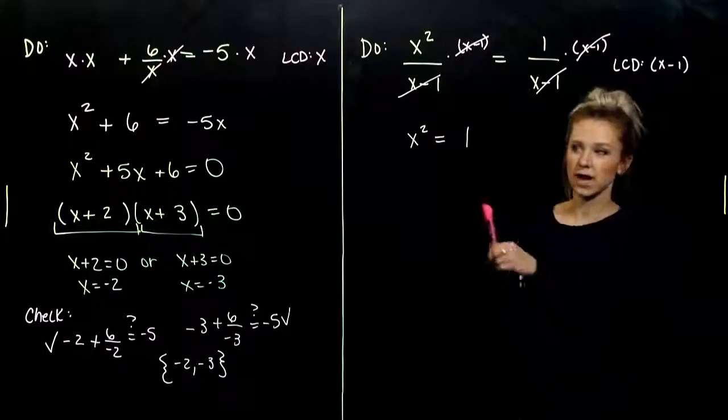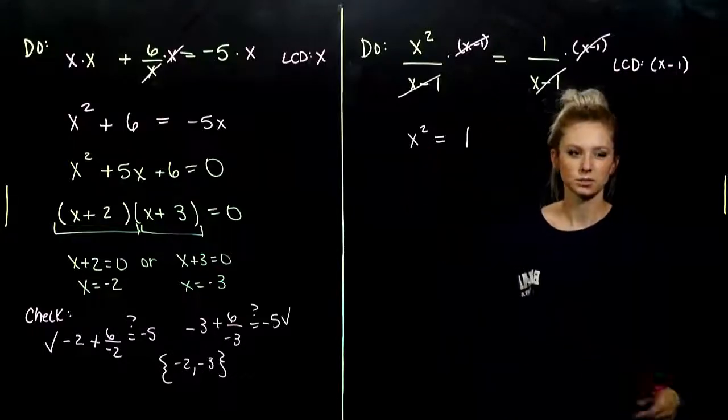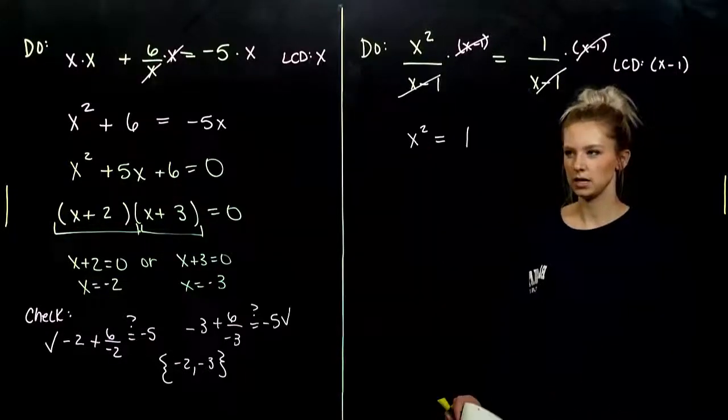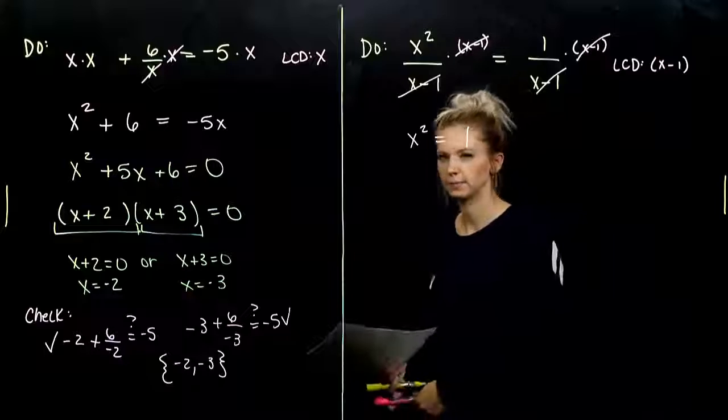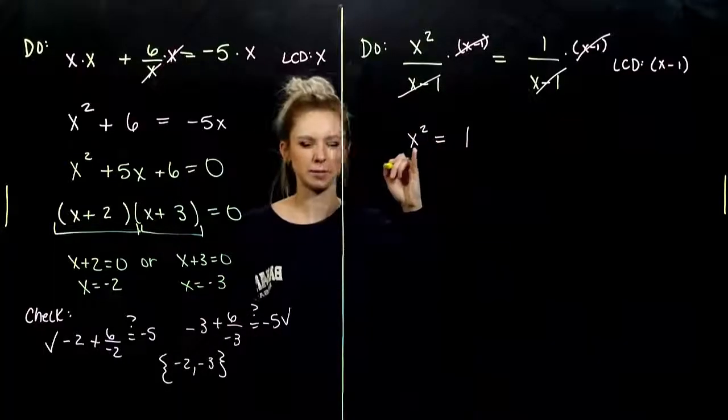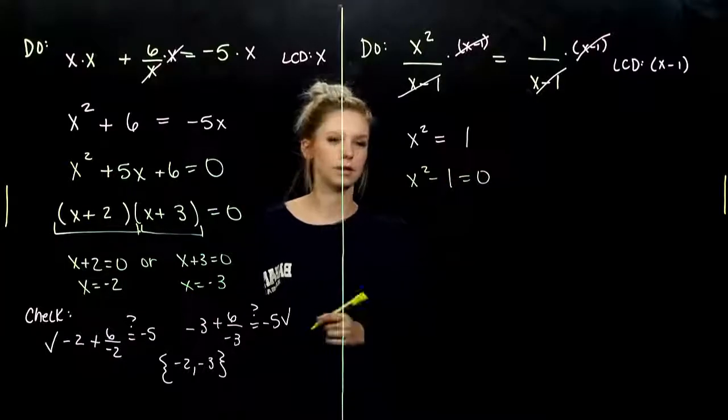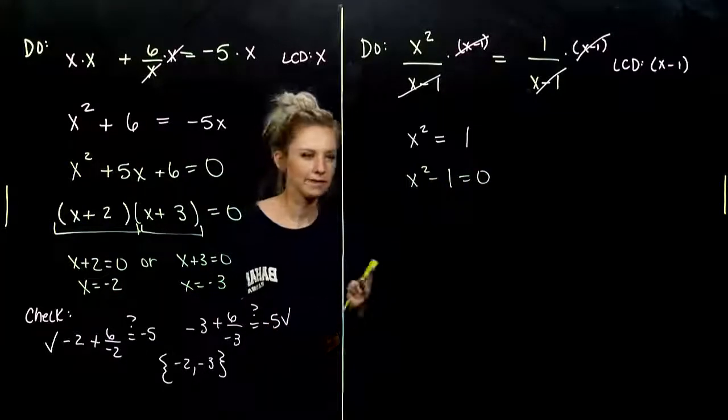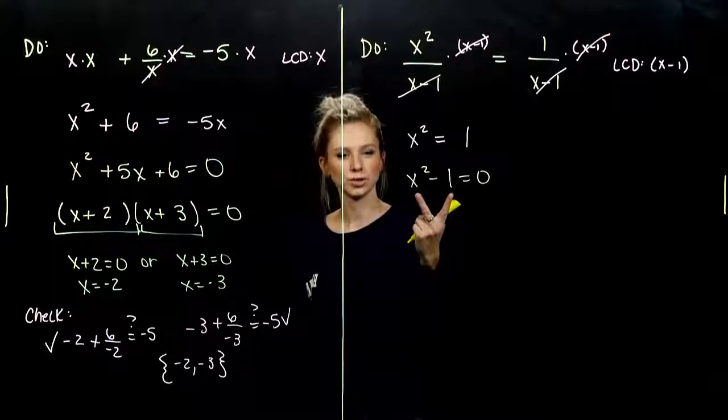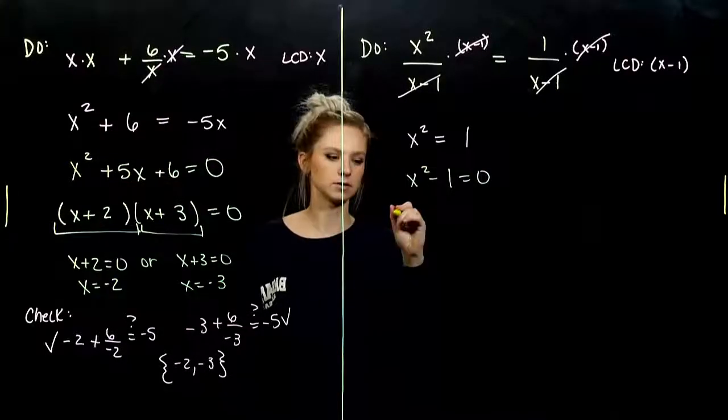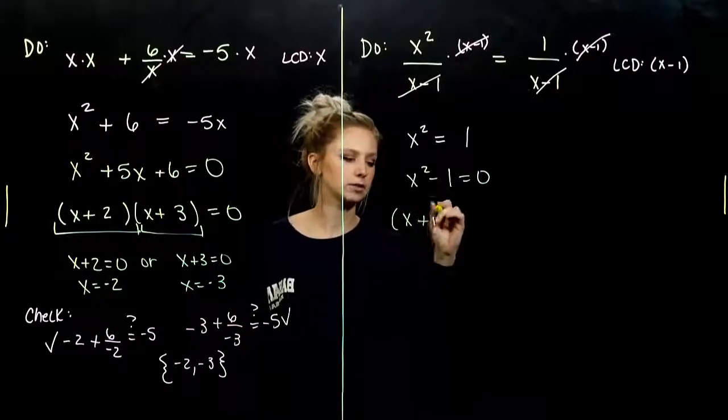So, again, we have a quadratic. So, we need everything on one side equal to zero. And I want my squared term to be positive, so he's going to stay. One is going to move to the other side. And I've got a binomial. Two terms. Is it a difference of squares? It sure is.